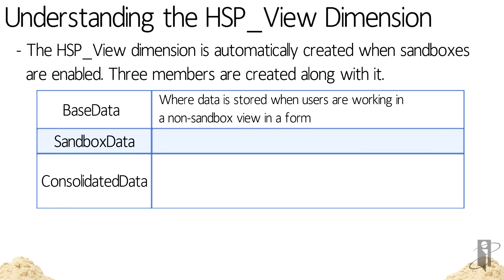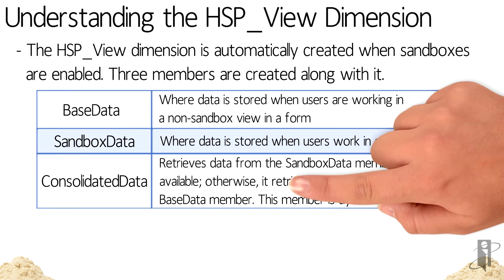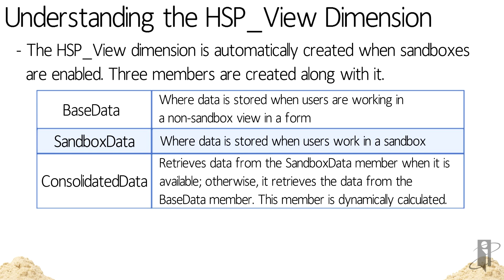Base Data is where the data is stored when users are working directly in the application — that is, when users are working in a non-sandbox view. The opposite of Base Data is Sandbox Data, which is where the data is stored when users are working in the sandbox. Consolidated Data is the combination of Base Data and Sandbox Data — data is retrieved from Sandbox Data when it is available, and if it is not, the data is pulled from Base Data instead.